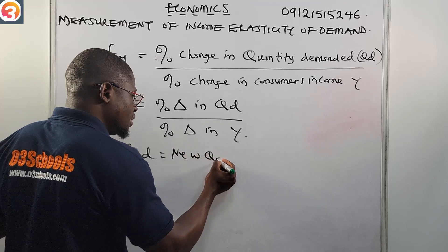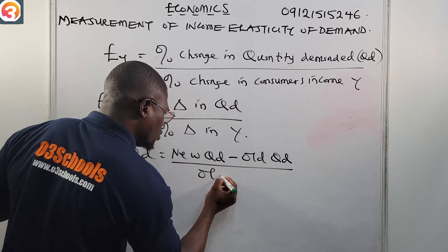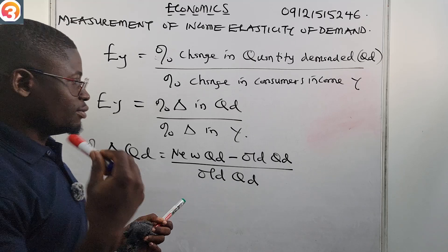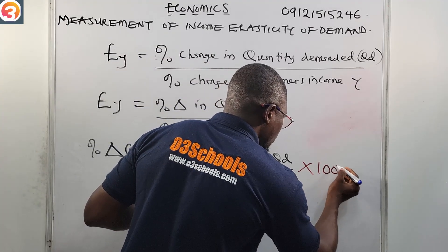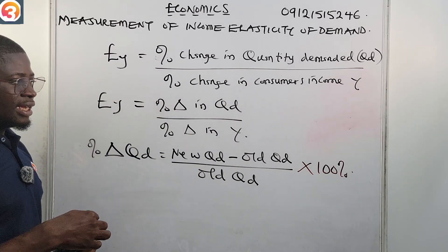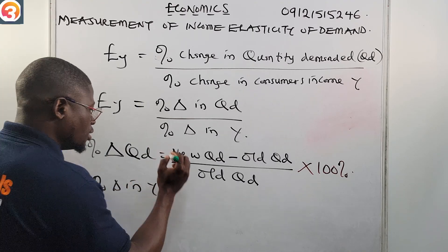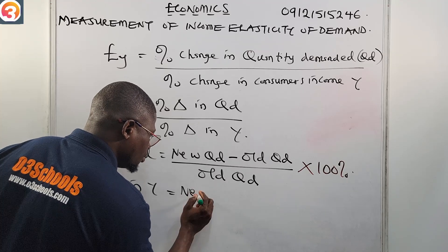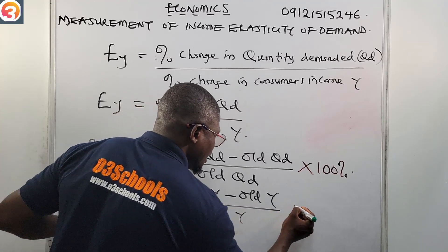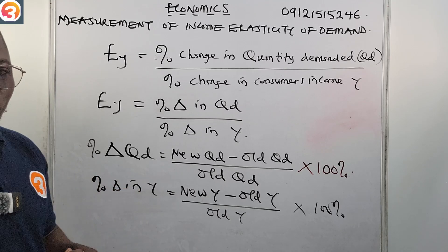Now we know that the percentage change in QD itself is: new quantity demanded minus old quantity demanded, all over old quantity demanded, multiplied by 100 percent. That gives us the percentage change in QD.